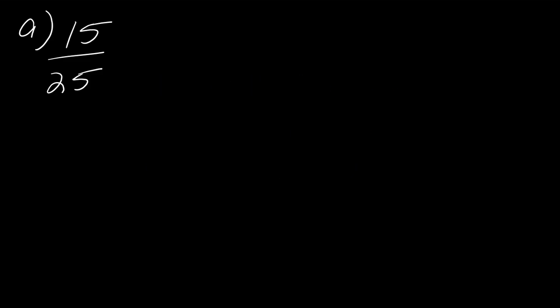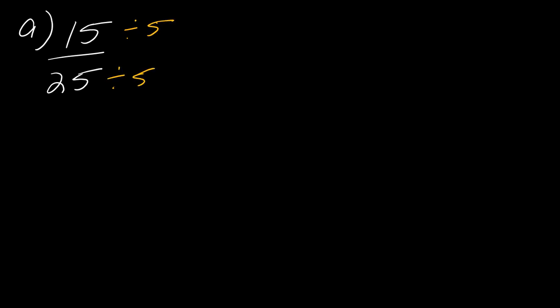Now let's talk about simplifying fractions. I've got 15 over 25. When you want to simplify a fraction, look at the top and bottom and think: what's the first number that pops into your head that both numbers are divisible by? Ideally, think of the largest such number, but start with whatever comes to mind. Since both end in five, I can see they're divisible by five — 15 divided by 5 is 3, 25 divided by 5 is 5, so this simplifies to three-fifths.